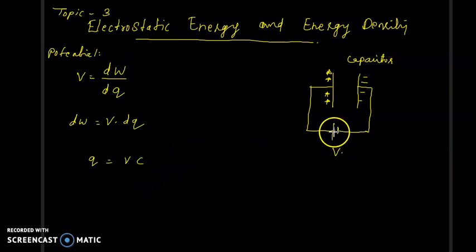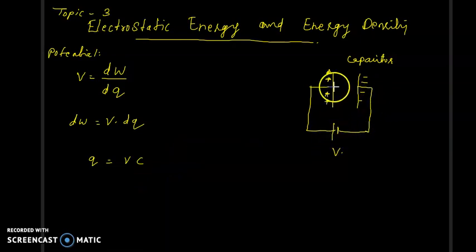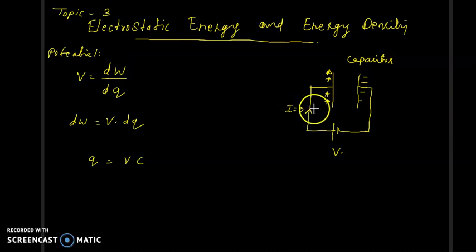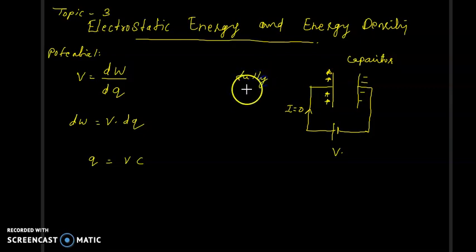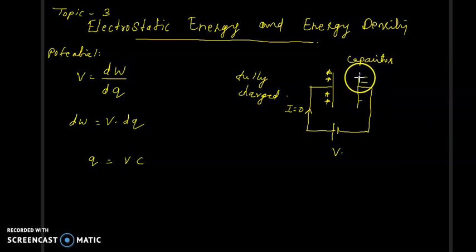After connecting this voltage source, the charges get accumulated and at one point the current becomes zero. When the current becomes zero, it indicates that the capacitor is fully charged. At that point, the total charge accumulated on the plate of the capacitor is Q.